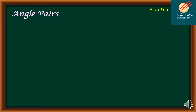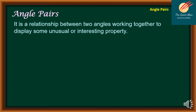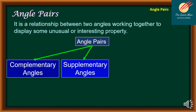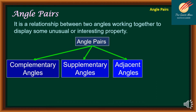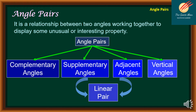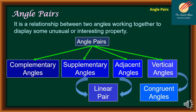Let us first define angle pairs. An angle pair is a relationship between two angles working together to display some unusual or interesting property. Complementary angles are two angles with a sum of 90 degrees. Supplementary angles are angles with a sum of 180 degrees. Adjacent angles are angles that have a common side. Vertical angles are angles formed by intersecting lines. When we satisfy the conditions for both supplementary and adjacent angles, we have a linear pair. Vertical angles are congruent angles.